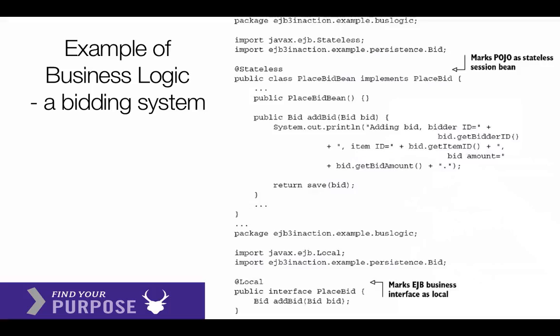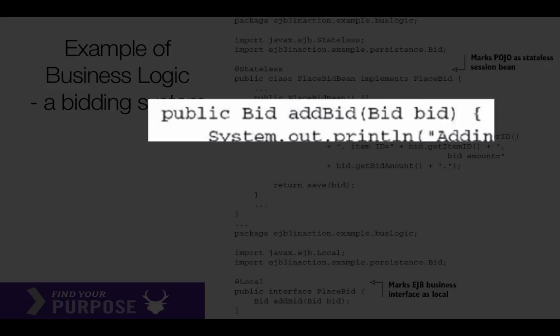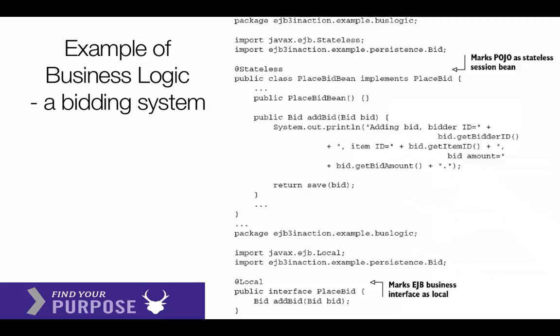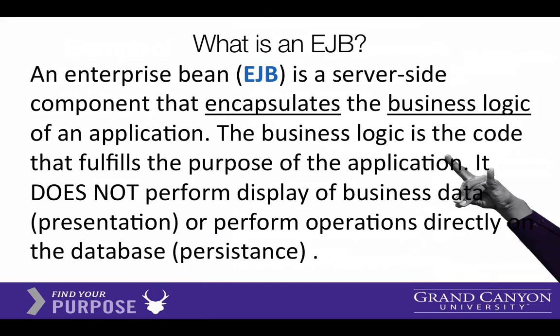Say you had a bidding system — maybe an auction. This class is designed to accept a bid, with a method called addBid to keep track of the number of bids and maybe the highest bid. EJB is the name for this kind of business logic — Enterprise Java Bean. The business logic is the code that fulfills the purpose of the application. Key term: it does not perform any display of data — that's for presentation — and it doesn't directly talk to the database — that's the persistence layer.